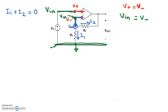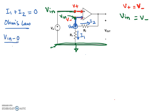Using Ohm's law: I1 flows from Vin towards ground through resistor R1, so I1 equals Vin minus zero divided by R1. I2 is going from Vin towards the node Vout, so I2 equals Vin minus Vout divided by Rf. Setting the sum equal to zero: Vin over R1 plus Vin minus Vout over Rf equals zero.